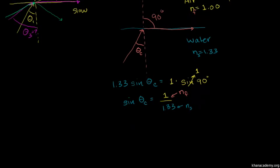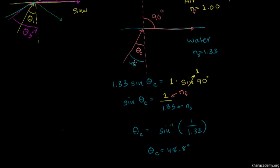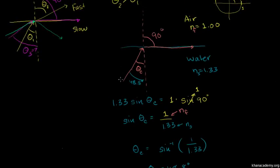So just to keep solving it, we can take the inverse sine of both sides, and we get our critical angle: the inverse sine of 1 over 1.33, which is 48.8 degrees. This tells us that if we have light leaving water at an incident angle of more than 48.8 degrees, it actually won't be able to refract or escape into the air — it will just reflect at that boundary. If you have angles less than 48.8 degrees, it will refract and escape. Right at that critical angle, you get a refraction angle of 90 degrees, traveling along the surface of the water.